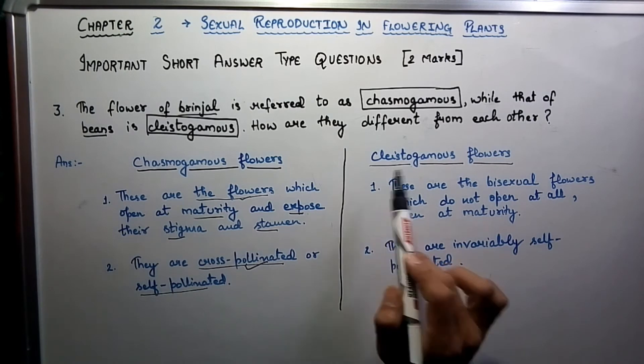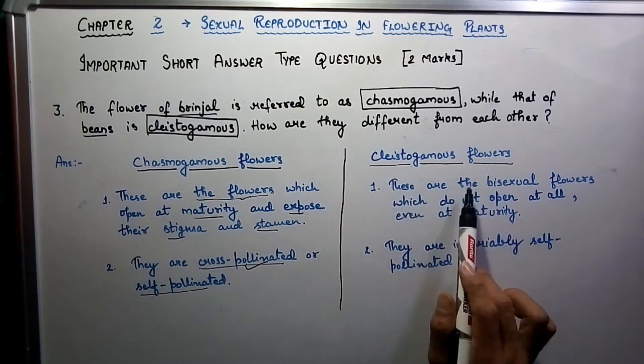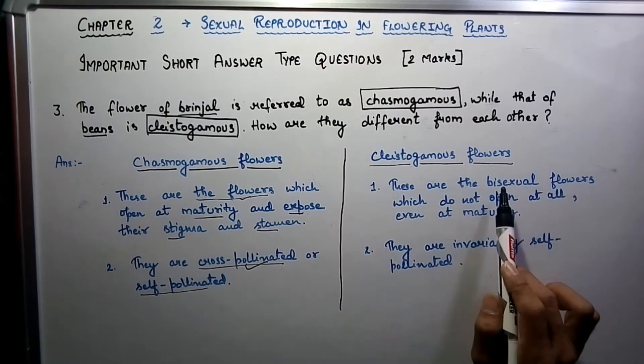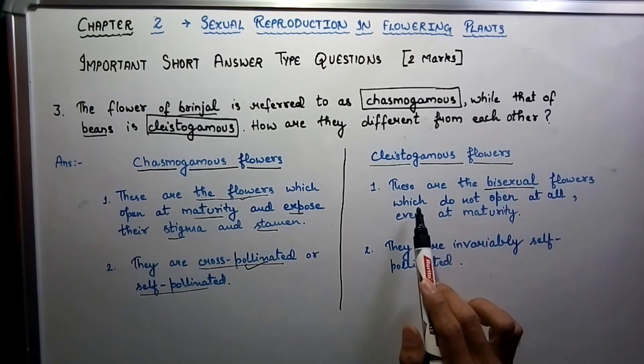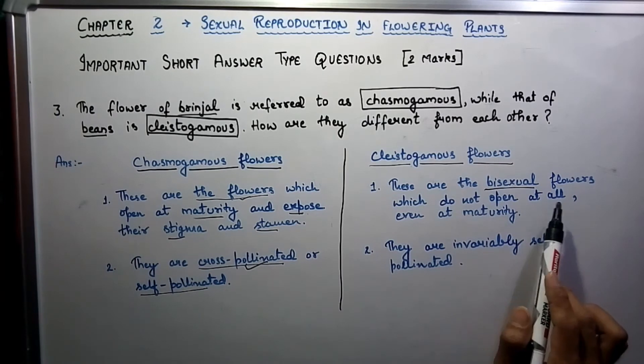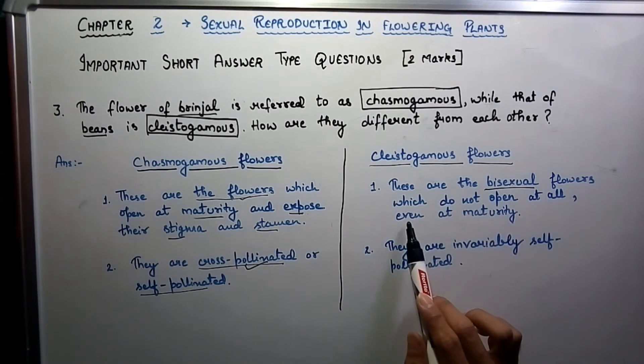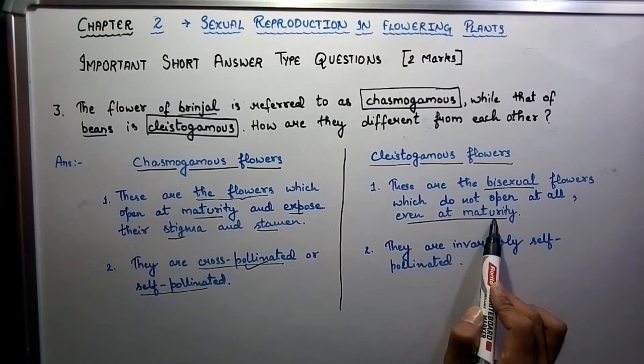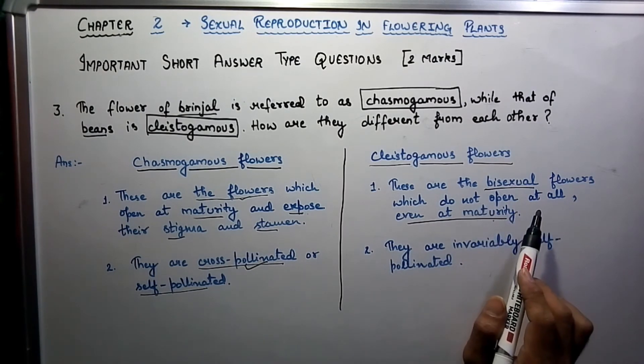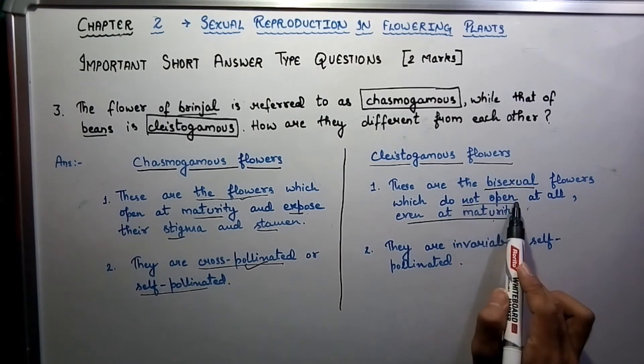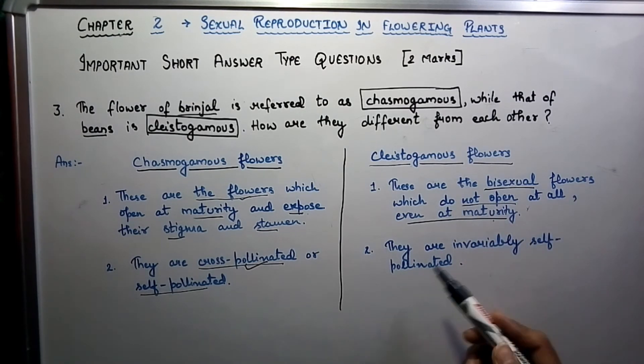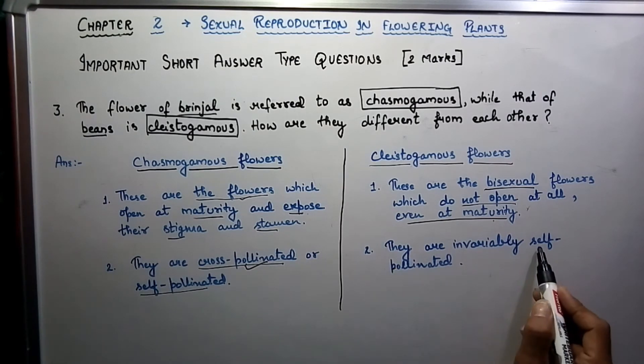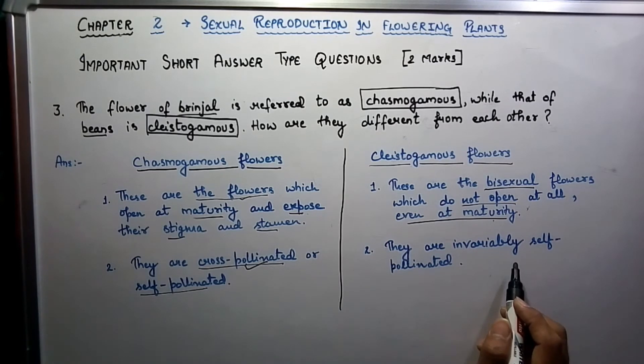In cleistogamous flowers, these are bisexual flowers, meaning both organs are present on the same flower, which do not open at all, even at maturity. Their stigma and style remain totally closed. The type of pollination is only self pollination, invariably. They have autogamy type of pollination.